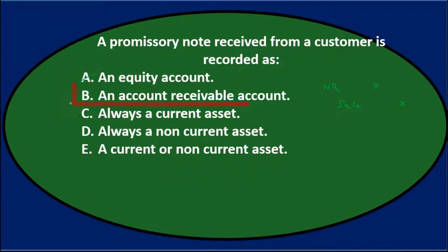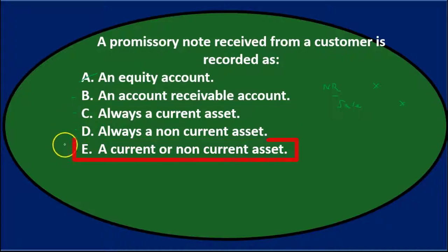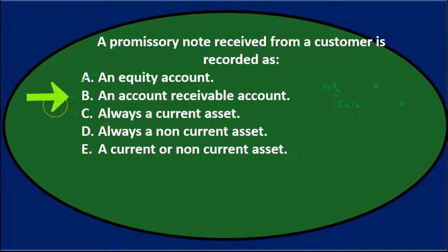So I'm going to say A is not the answer. B says an accounts receivable account — it is still a receivable, so we might say 'hmm, it's a receivable,' but I'll leave that for now. C says always a current asset, and D says always a non-current asset. Note that those two are basically exclusive to each other, so if one is true they kind of cancel each other out. Then E says a current or non-current asset, and if we look at these three they're all related.